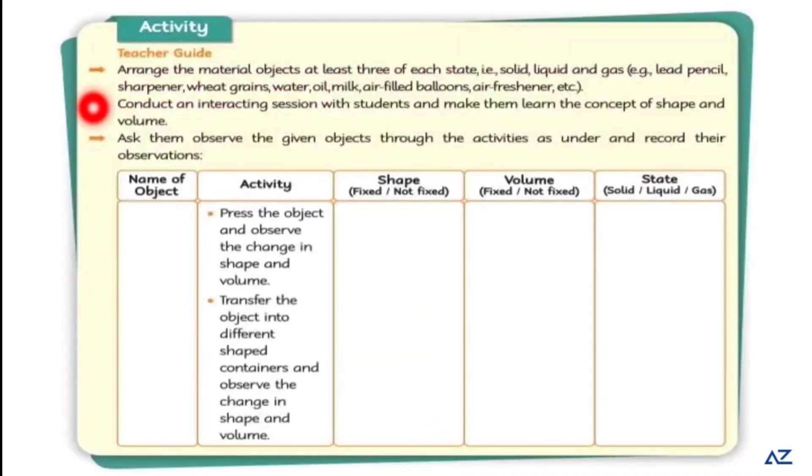The next is the activity. Name of the object activity. The activity is: press the object and observe the change in shape and volume. So here will be gas. Shape is not fixed, volume is not fixed, and state will be gas. Transfer the object into different shaped containers and observe the change in shape and volume. Here will be liquid. Not fixed shape, volume fixed, liquid state.